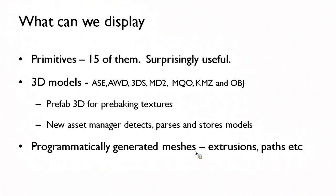3D models are actually extremely complex files. They contain meshes, objects, submeshes, all sorts of geometries. They can contain multiple materials, lights, a vast amount of things, and animations as well. OBJ files are static — they're really simple, just meshes — whereas 3DS files contain entire folders full of stuff which tells you where everything is.